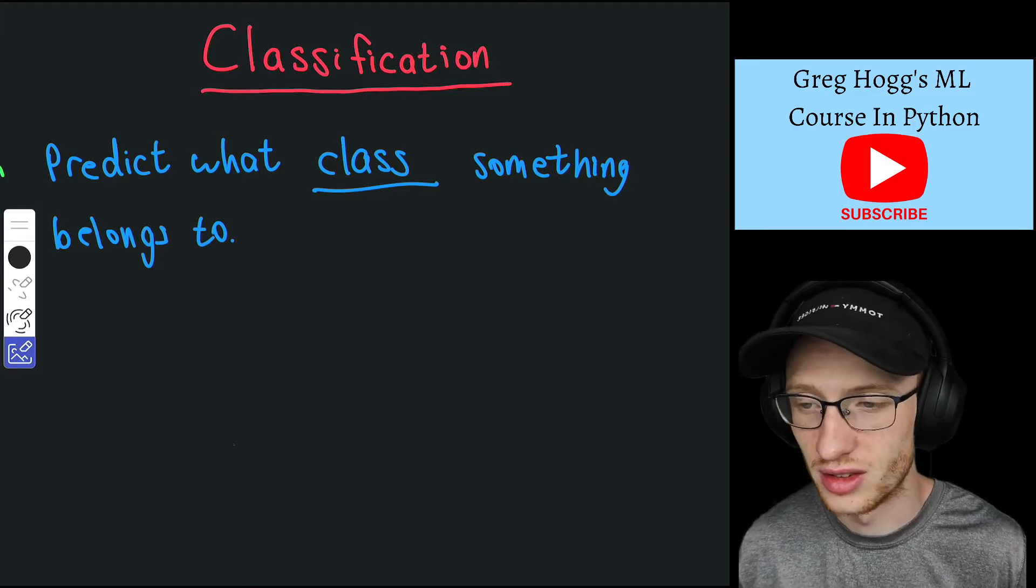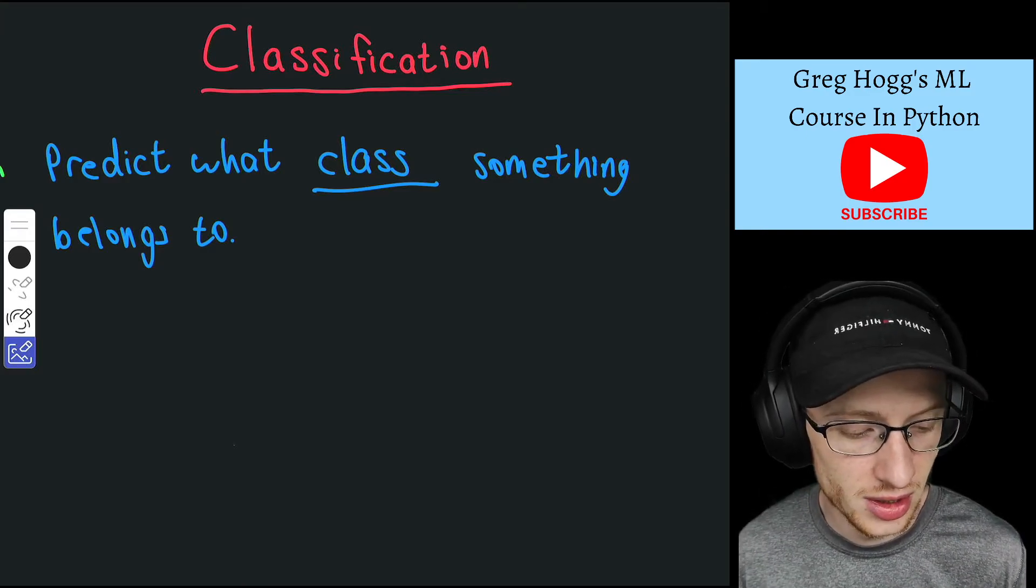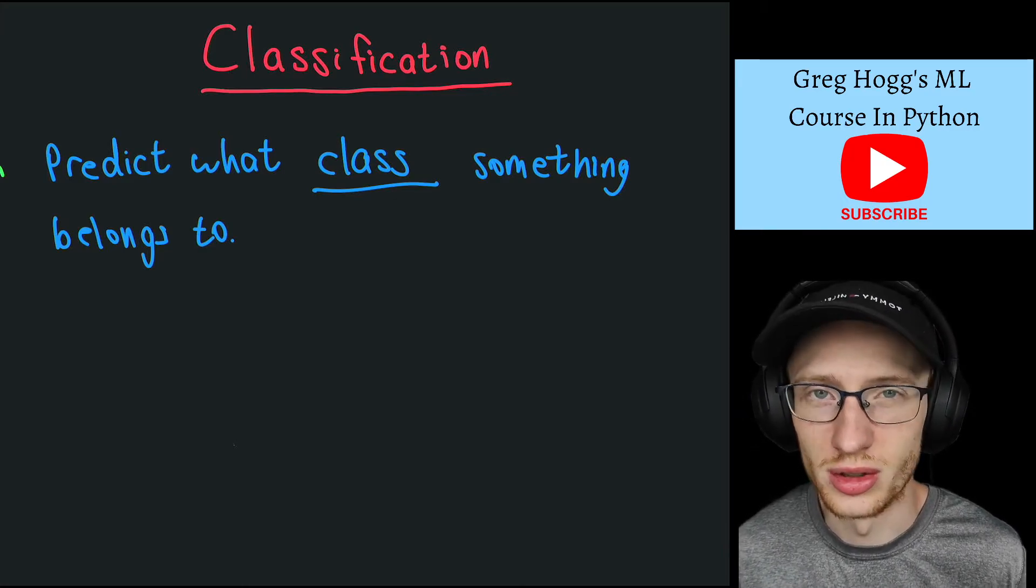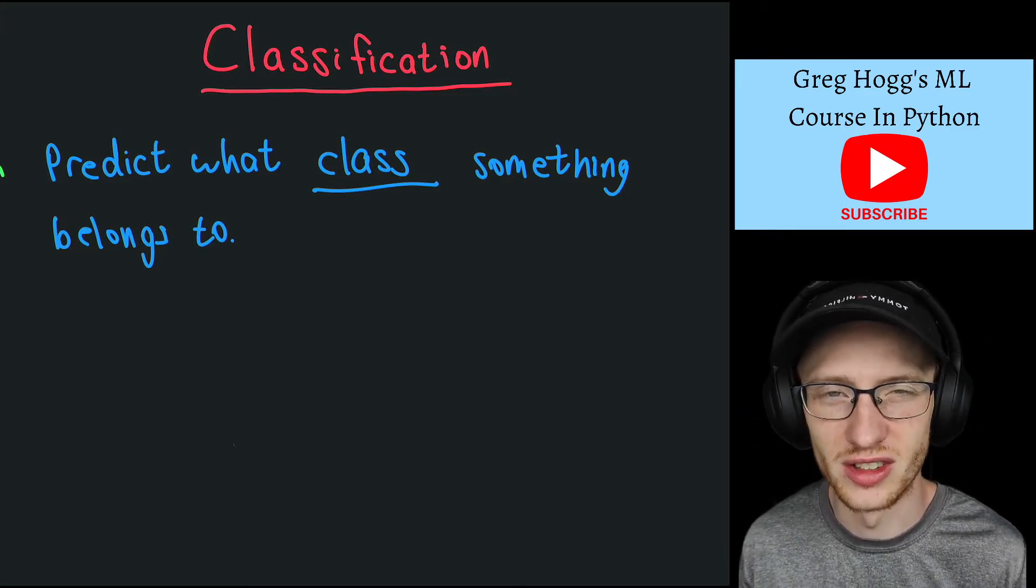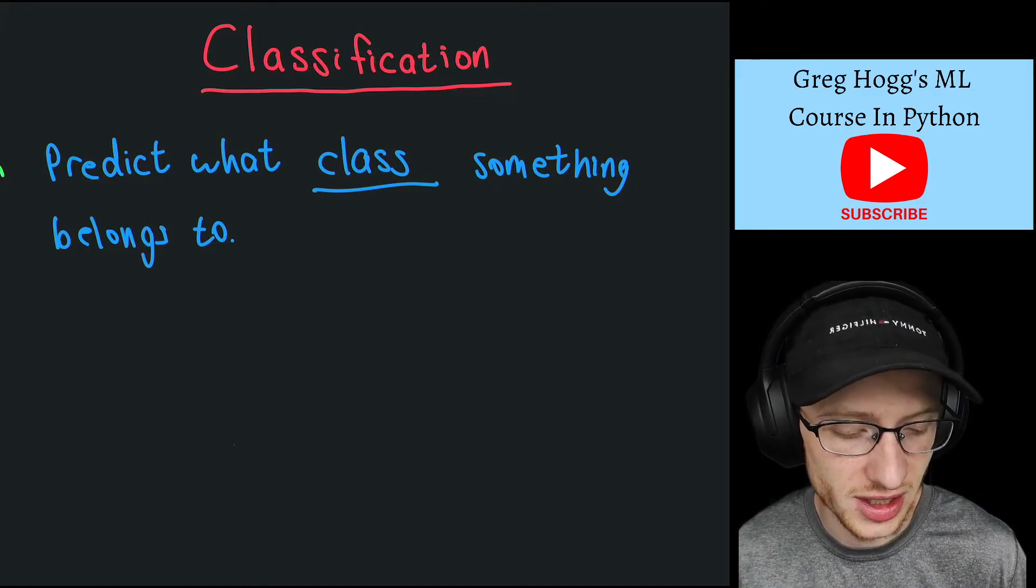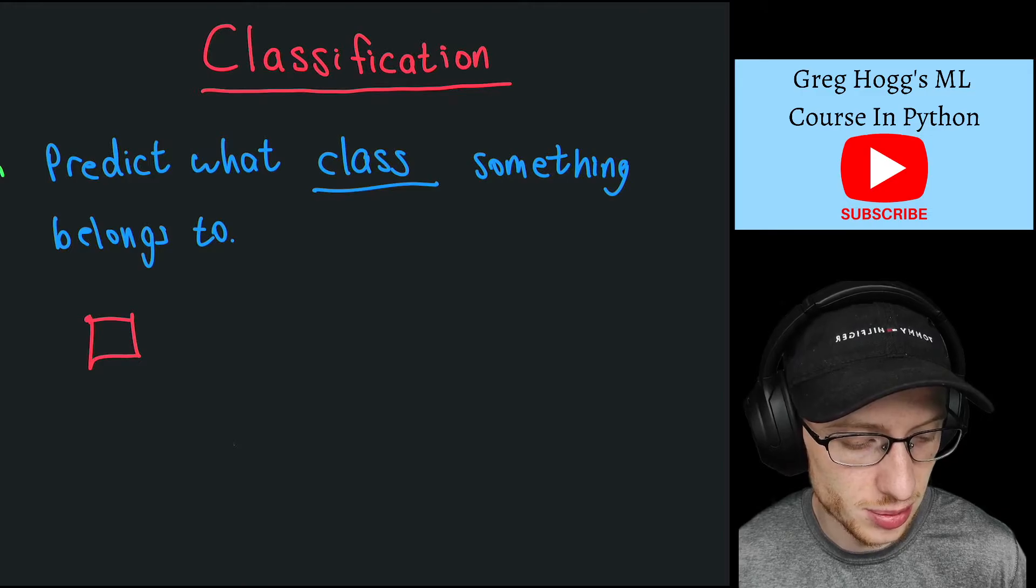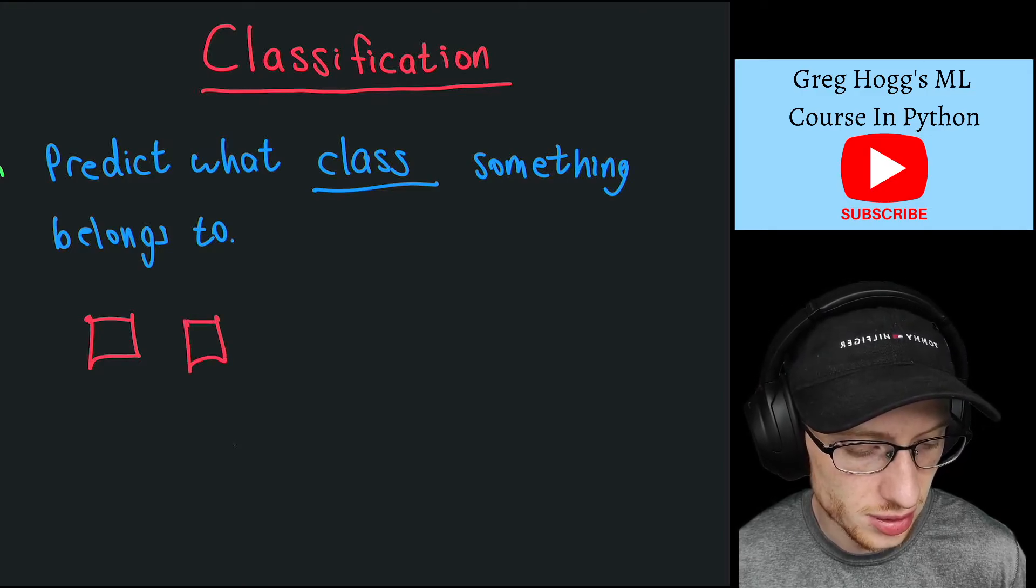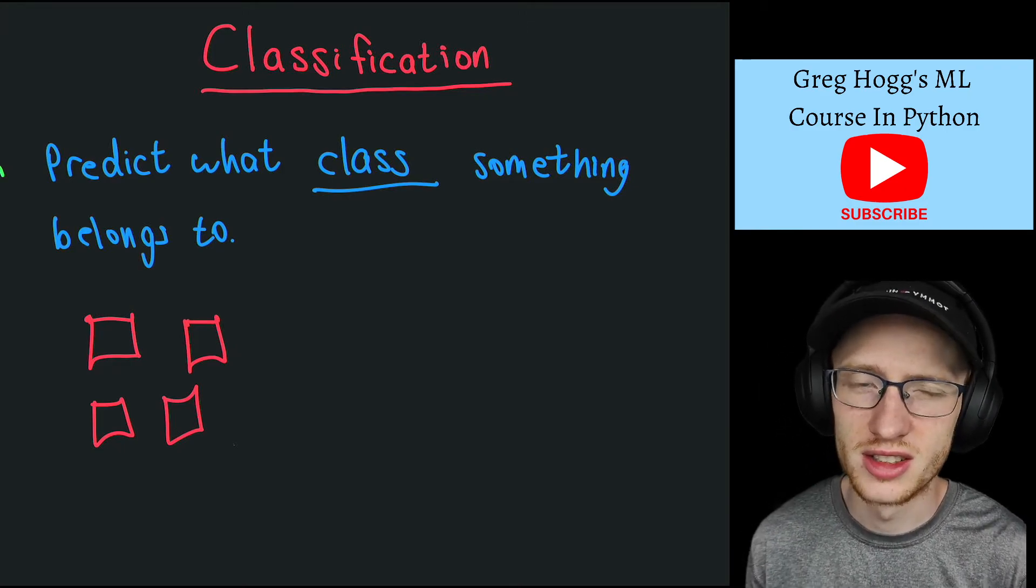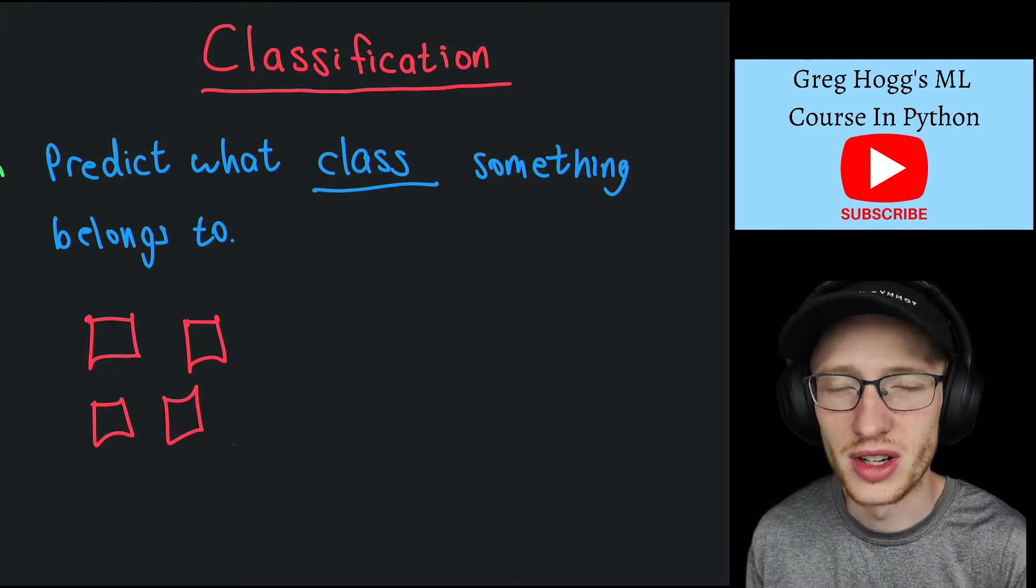In classification it's similar, except something is either class A or class B. For simplicity, let's say you're using picture data, which is very common in research nowadays. Our data is a bunch of pictures: picture 1, picture 2, picture 3, picture 4.